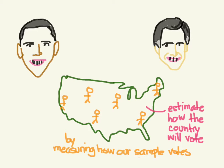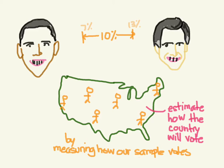In our example, we see that candidate A leads candidate B by 10%. But that's not the whole story, because this is an estimate — a guess. So how close is our guess? That's why in poll numbers you'll hear 'plus or minus 3%.' We think the real value is somewhere between 7 and 13.